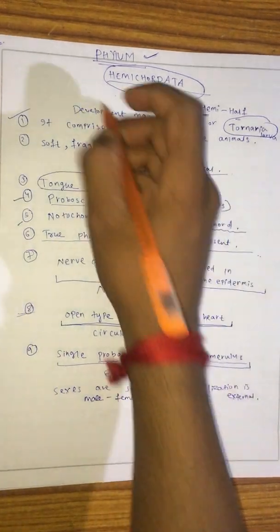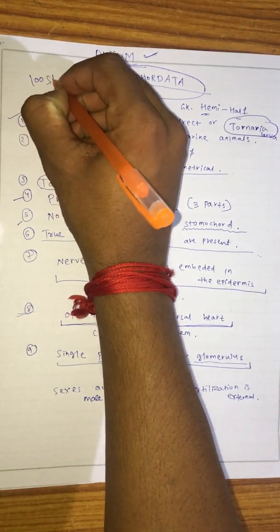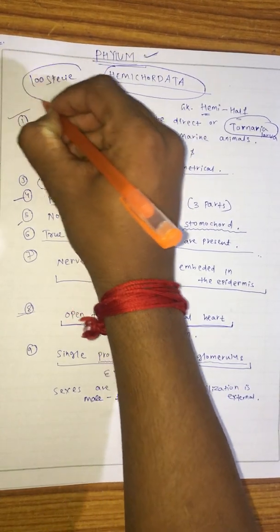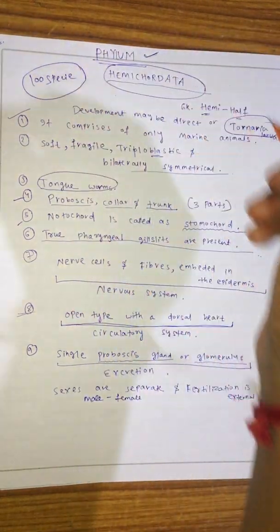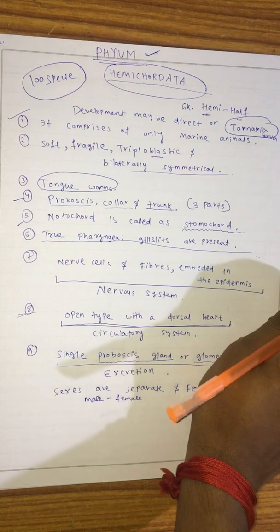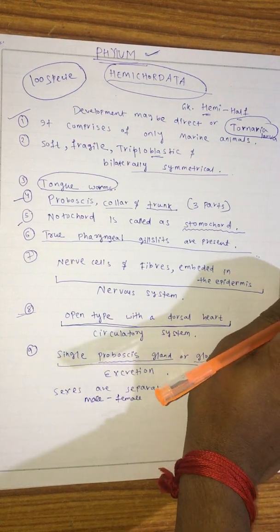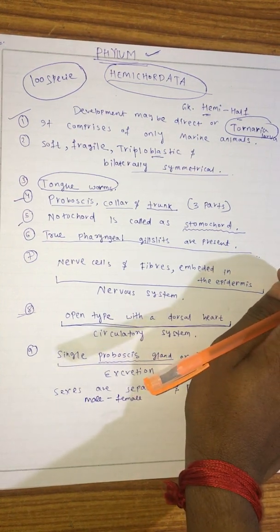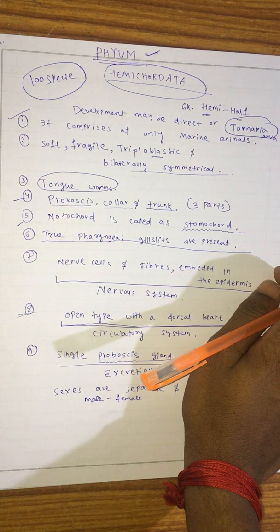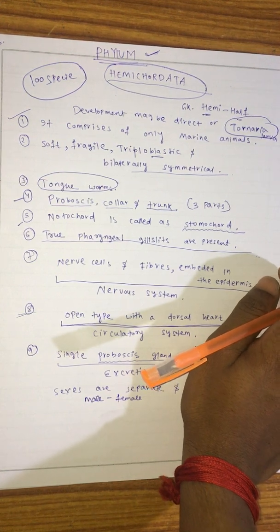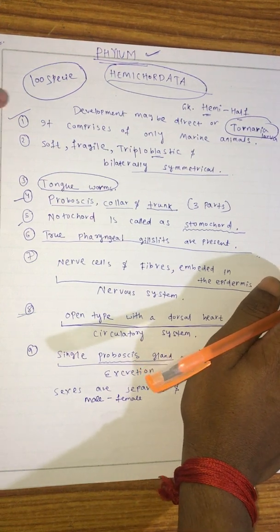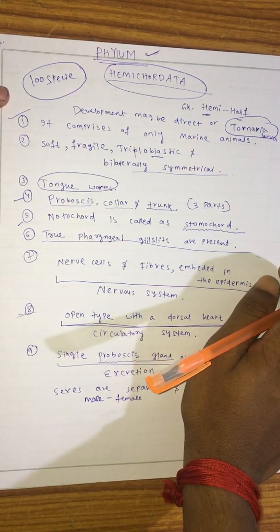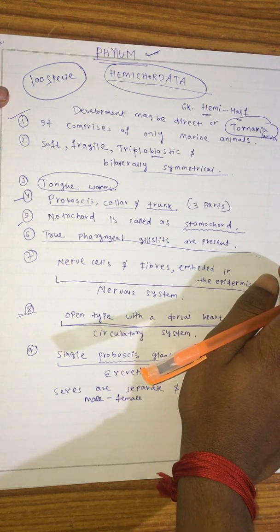This phylum, Hemichordata, contains nearly only one hundred species.